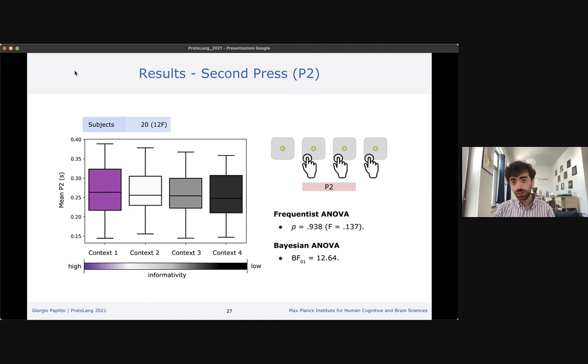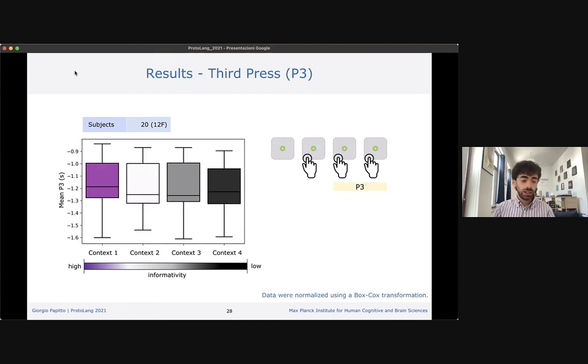Now we can look at the final and third press. Here the results are almost identical to what was observed for the second press. The frequentist ANOVA gave us a non-significant effect, but then we ran the Bayesian ANOVA. Again, this time we got evidence in favor of the null hypothesis. So also in this case, context informativity does not have an effect on the time participants need to make the third press.